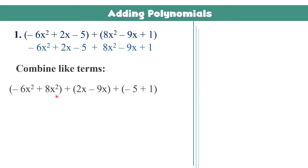Let us now add them. You have to remember the rules in adding integers: if they have the same sign, you add and copy the sign; but if they have different signs, you subtract and copy the sign of the larger number. In the first set of terms, we have negative 6 and positive 8 — different signs. Therefore, subtract them and copy the positive sign of the larger number. So 8 minus 6 gives positive 2.